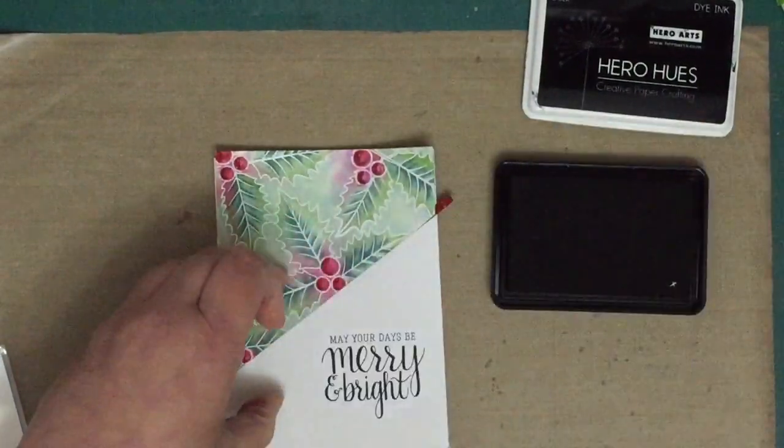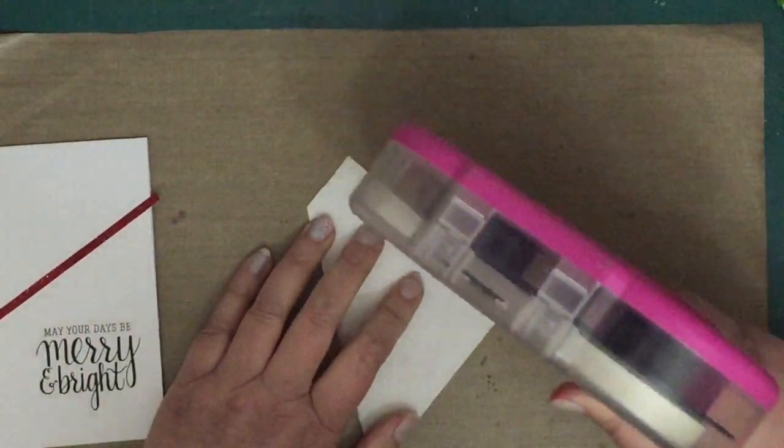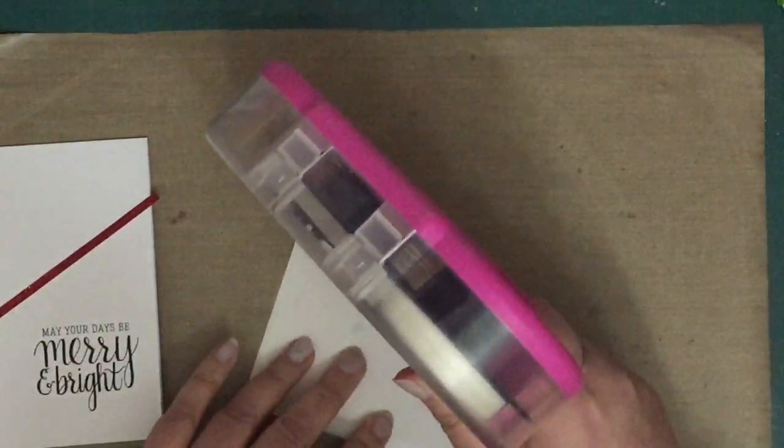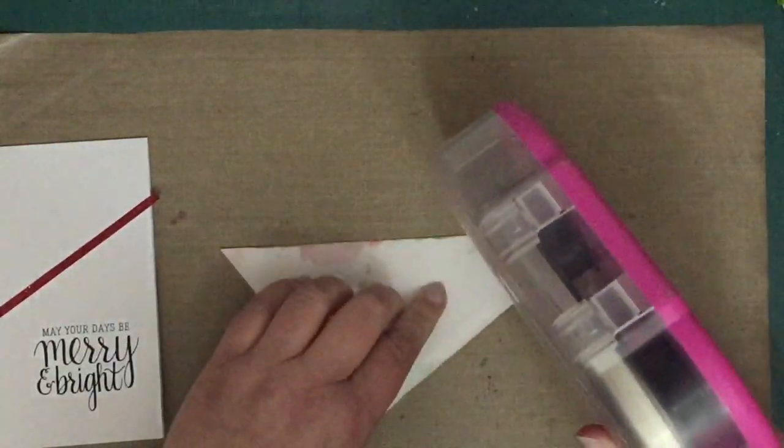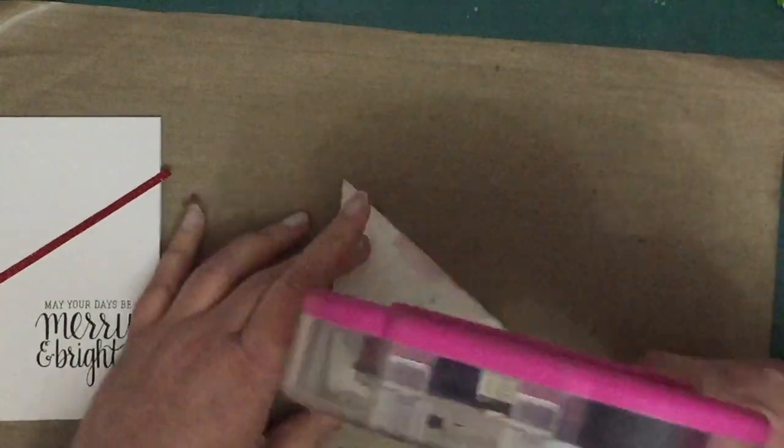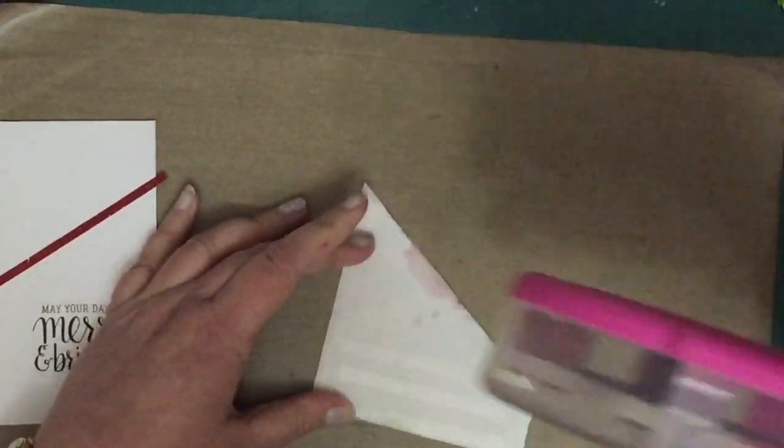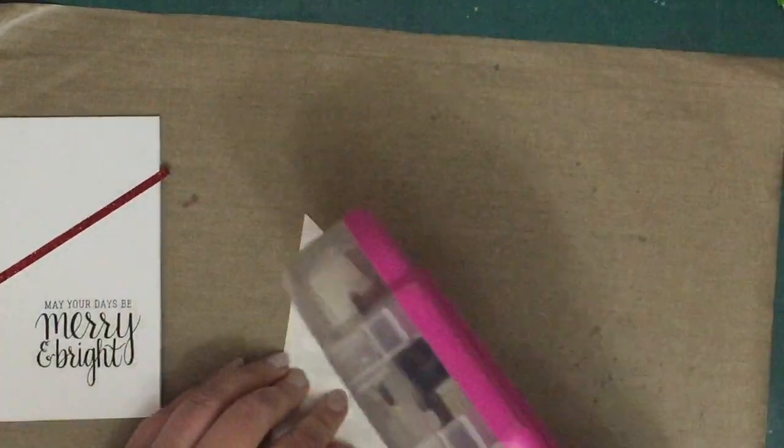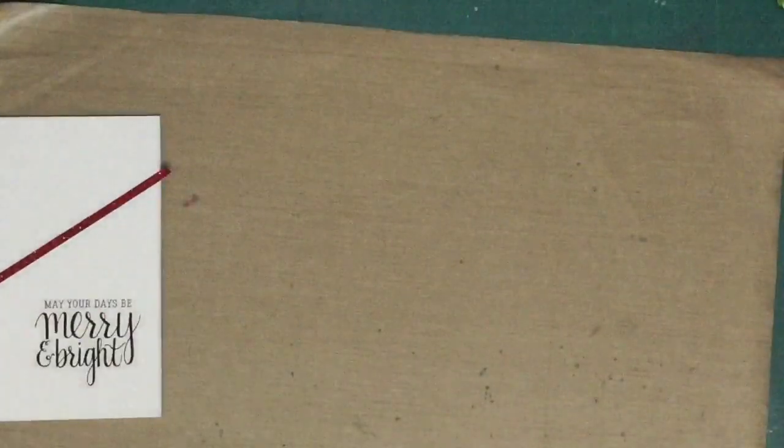All right, and now I'm pretty much done except for some assembly. So because this is on watercolor paper and it definitely warped while I was just blasting it with so much water, I'm using my Scotch ATG, which has some really strong adhesive.